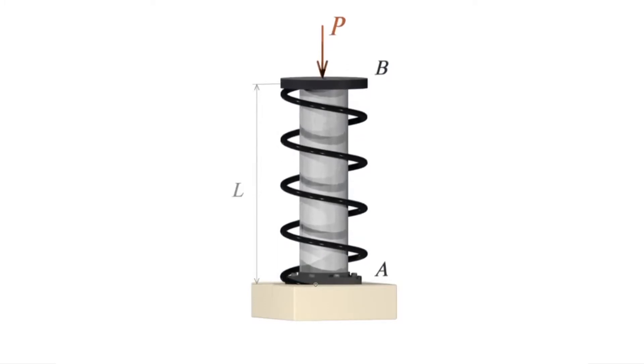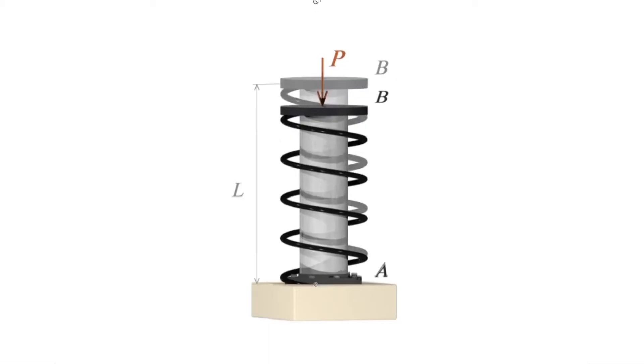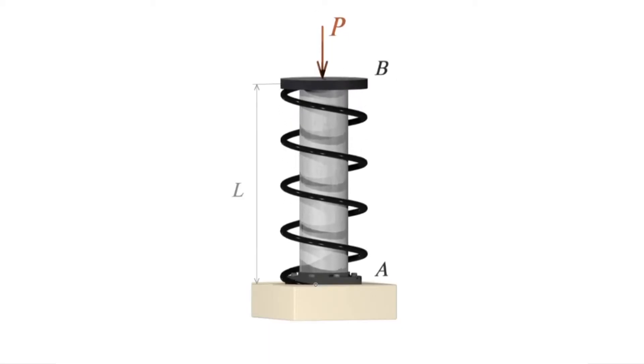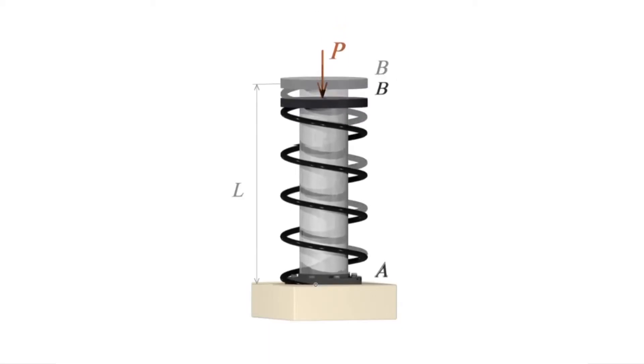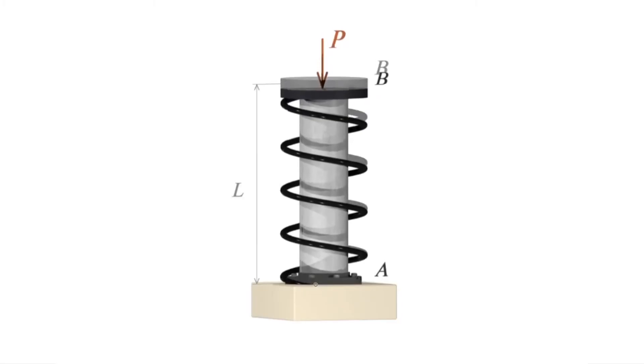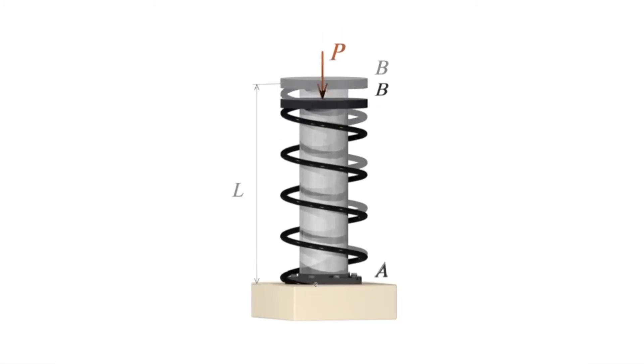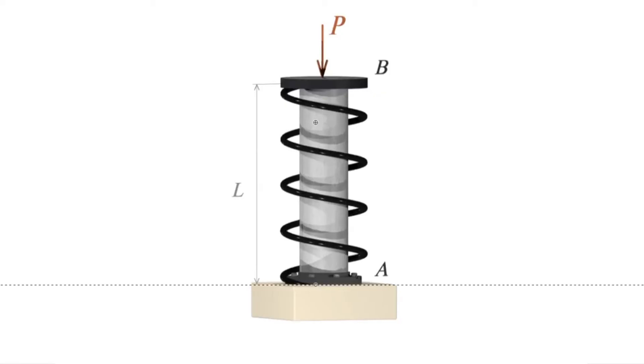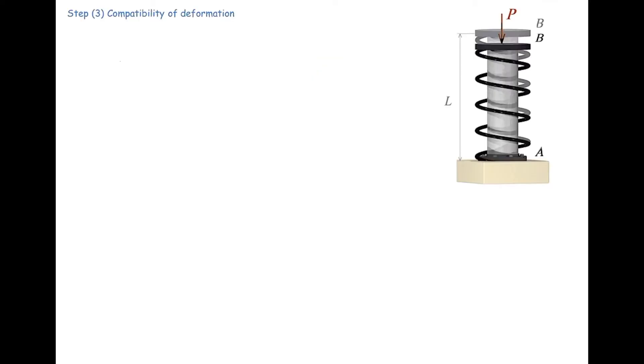If force P is applied, both spring and shaft are pushed downward. At the bottom, they are fixed, and at top, they are connected together. In other words, the deformation in spring and the deformation in the shaft should be equal to each other. One is within the other one. So I can say the compatibility of deformation is delta 1 is equal to delta 2.